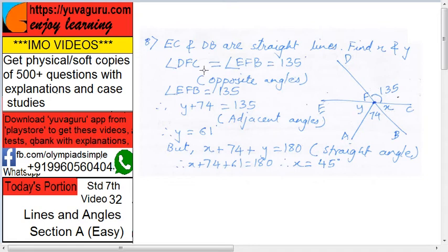DFC equals EFB because DB and EC intersect, so these two angles are vertically opposite angles. DFC and EFB are vertically opposite angles, so they are equal. Both are 135 degrees, so EFB becomes 135.